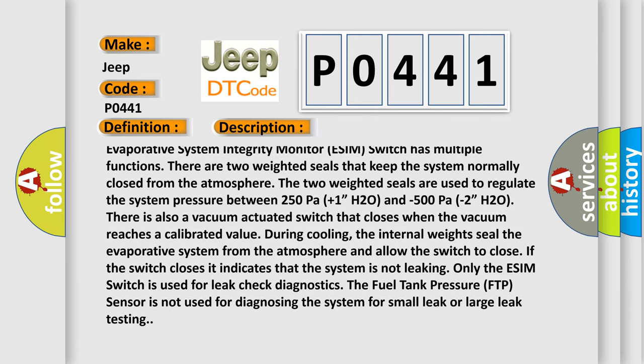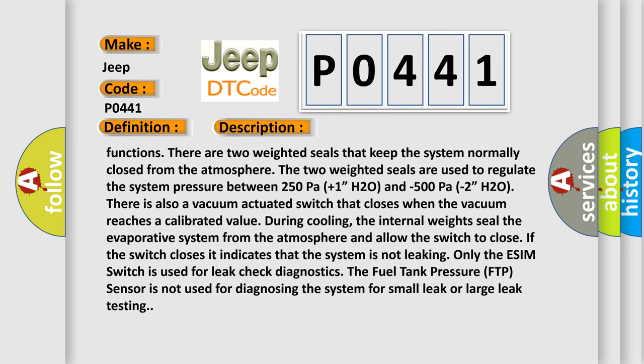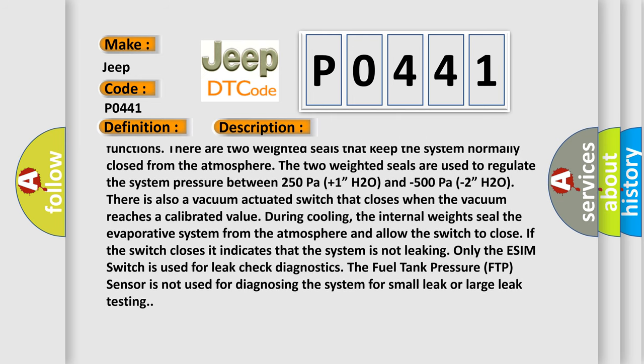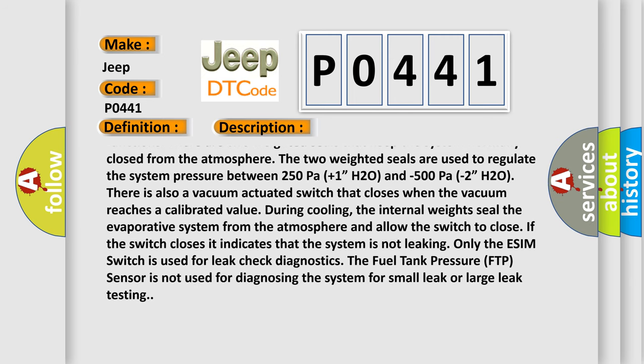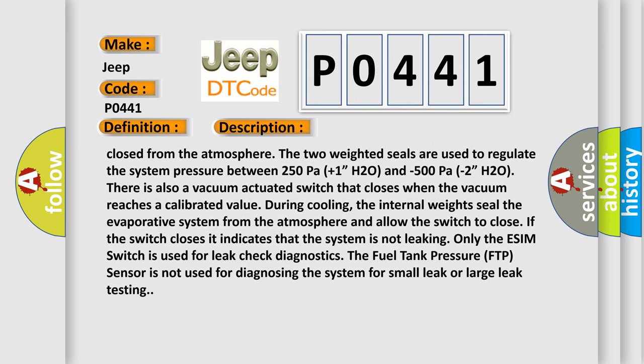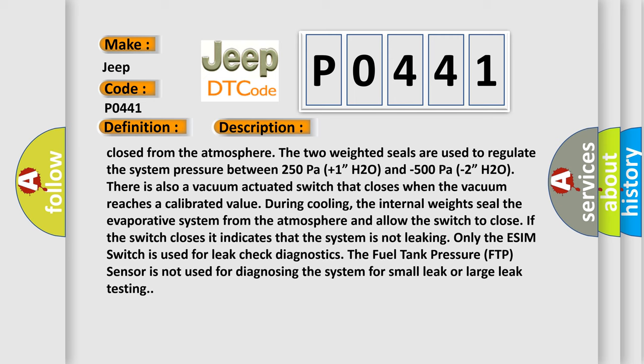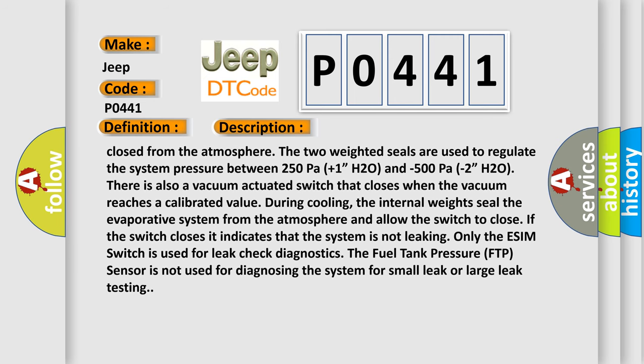There is also a vacuum actuated switch that closes when the vacuum reaches a calibrated value during cooling. The internal weights seal the evaporative system from the atmosphere and allow the switch to close. If the switch closes, it indicates that the system is not leaking. Only the ESIM switch is used for leak check diagnostics. The fuel tank pressure (FTP) sensor is not used for diagnosing the system for small leak or large leak testing.